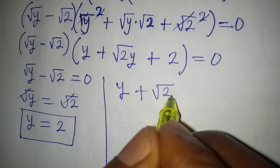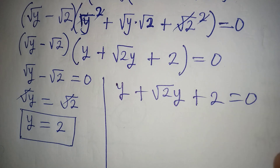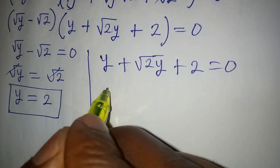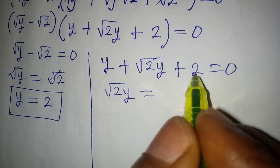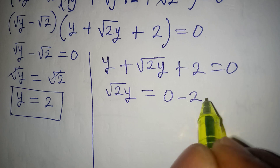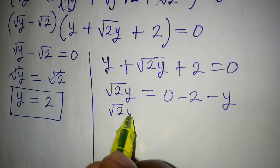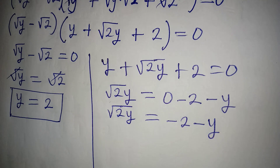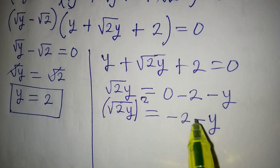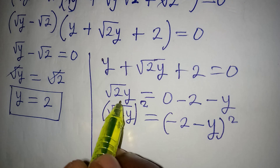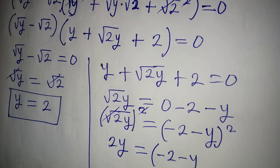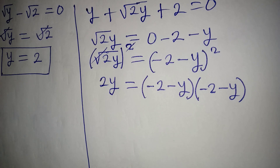To get the other values of y, we go to the second bracket: y plus square root of 2y plus 2 equals 0. The first thing I will do is make square root of 2y the subject. So square root of 2y equals 0 minus 2 minus y, which gives square root of 2y equals minus 2 minus y. Now we square both sides.